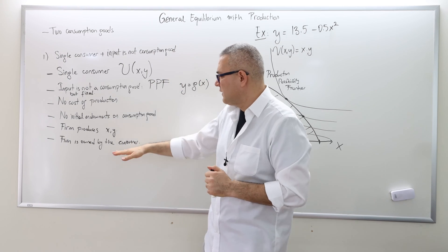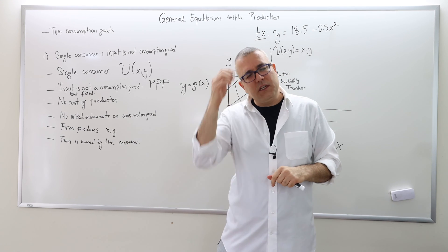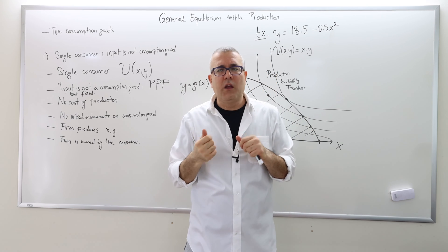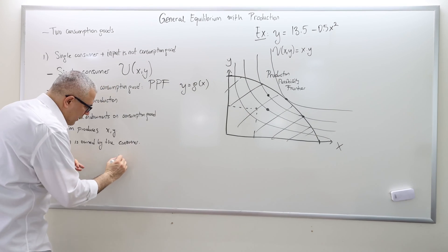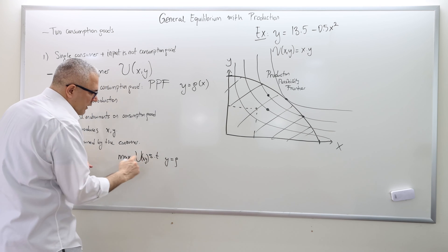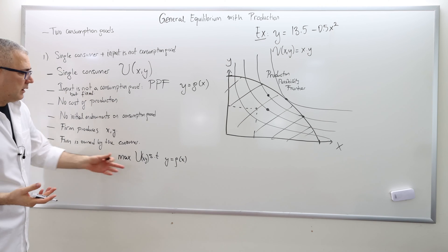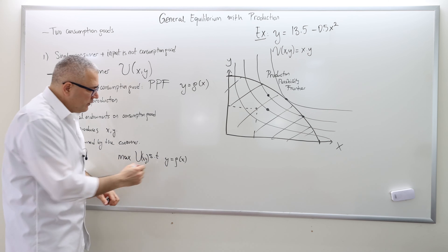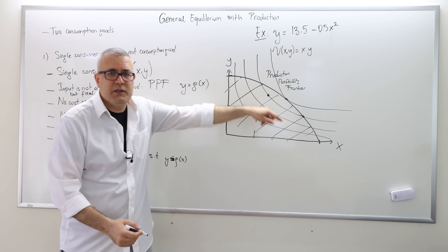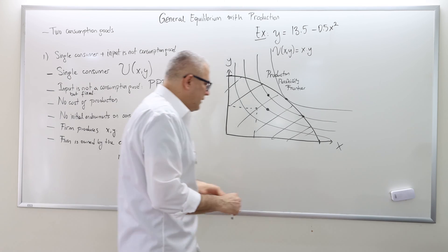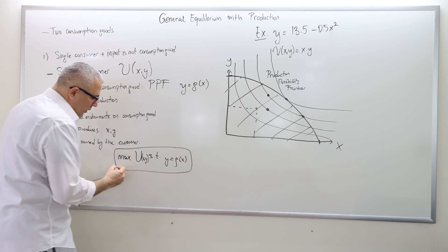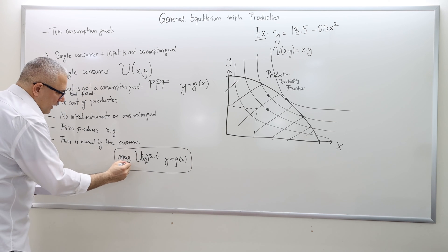Why do we need this last assumption? In order to find the optimal amounts of good X and good Y, all we have to do is maximize the utility of the agent subject to Y equals G(X), which is the technology constraint. You have to be on the boundary — Y must equal G(X) — and you maximize utility subject to this constraint. But our objective is to create a general equilibrium framework with multiple agents, so I'm going to solve the general equilibrium version of this problem rather than the single-agent decision problem.